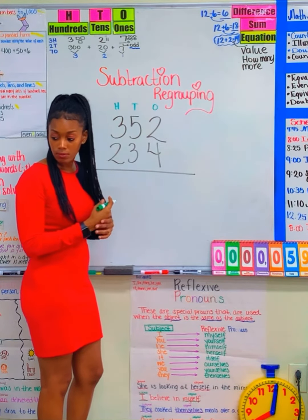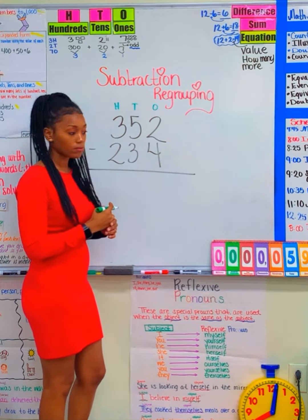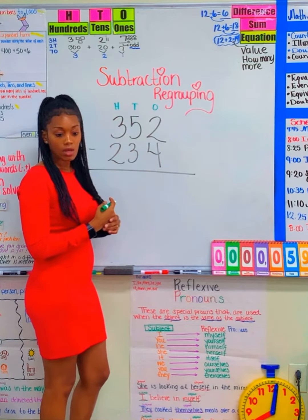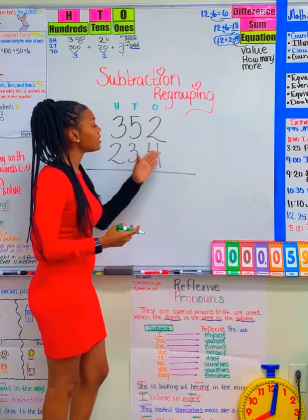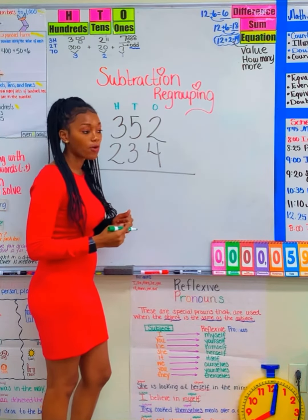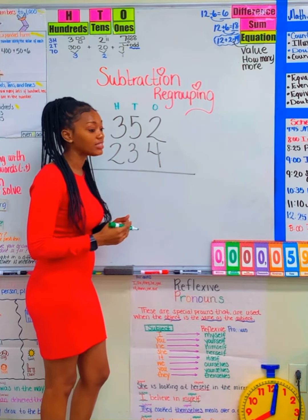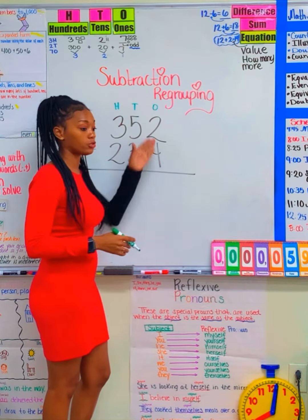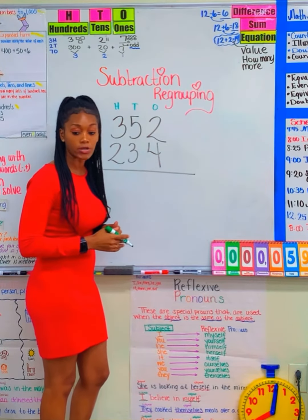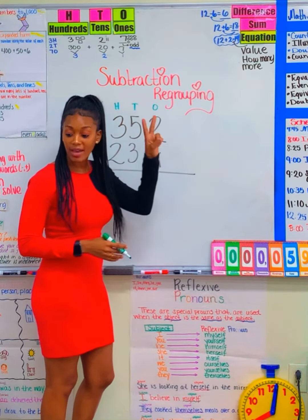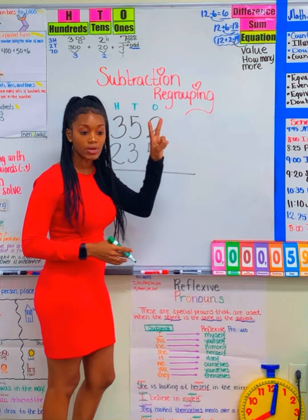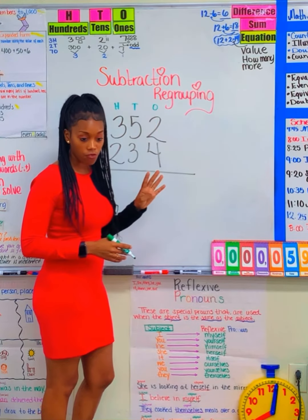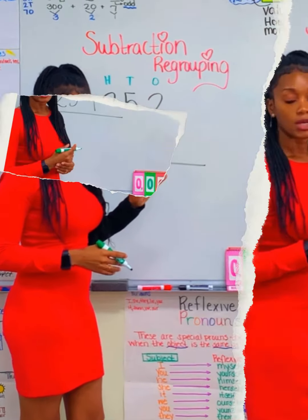You cannot take away 4 from 2 because 2 is less than 4. So I cannot just say, oh I can just do 2 minus 4. No! If I have 2, I cannot take away 4.